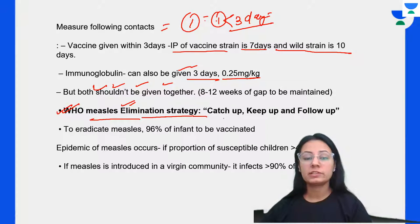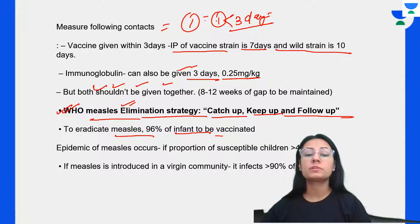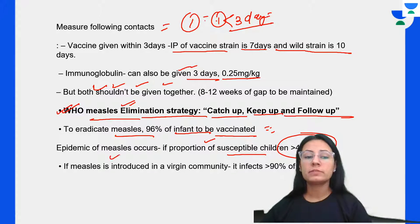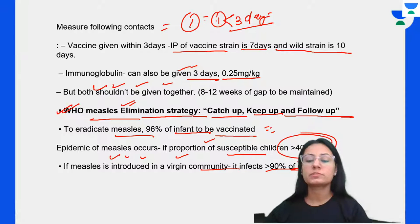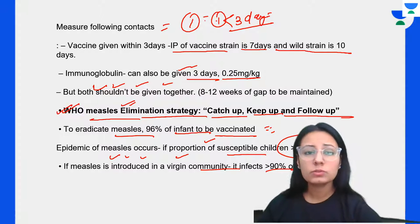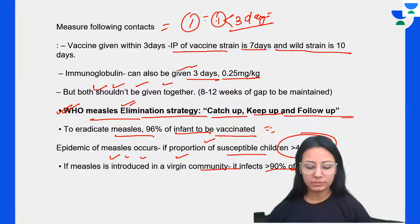WHO measures include the ignition strategy: catch-up, keep-up, and follow-up to eradicate measles. 96% of infants must be vaccinated to eradicate measles. An epidemic appears if the proportion of susceptible children is more than 40%. If measles is introduced into a virgin community, it infects more than 90% of children.